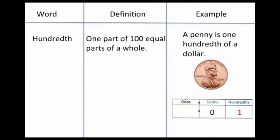Our next word is hundredth. Hundredth is one part of one hundred equal parts of a whole. An example is a penny. A penny is one hundredth of a dollar. And if you look at the place value chart down below, the hundredths are two places to the right of the decimal point.